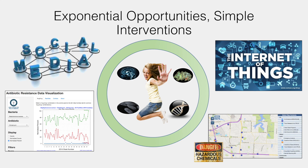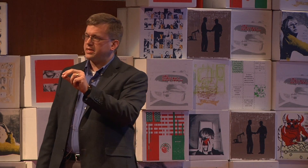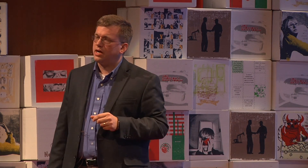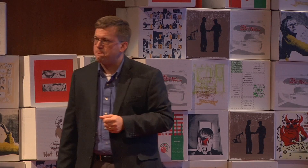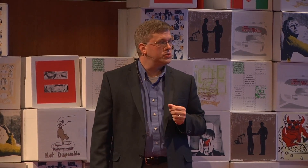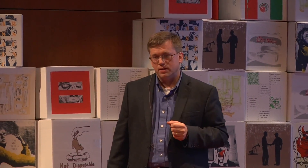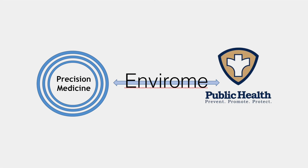The EPA also provides mapping information that shows sites that have reported their releases of toxic substances and also shows Superfund sites. What happens if you put that data at the fingertips of an oncologist when they're talking with a cancer patient? It opens up new doors, new opportunities for them. That's why I think that the envirome is where precision medicine meets public health. Thank you.